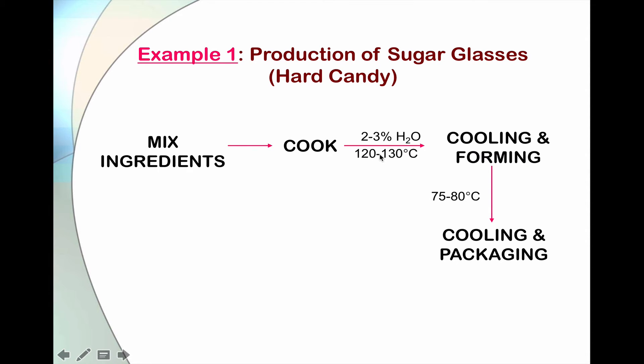Then, when we achieve this concentrated sugar mass, the next step is to cool the sugar mass to around 75 to 80 degrees Celsius. And then, it will go into the forming process, so we can cut it into a desired shape. And after forming, the hard candy pieces are then cooled to room temperature.